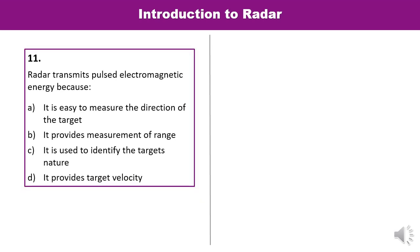Question 11: Radar transmits pulsed electromagnetic energy. Because — read all options carefully: it measures direction of target, measures range, identifies targets, or provides target velocity. Radar is used to calculate range — its primary function is measurement of range. So B is the correct answer.